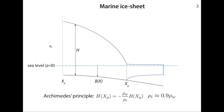This cartoon shows the vertical cross section of a marine ice sheet. It sits on a bed denoted by B, which is below sea level, and its horizontal extent is limited by the location when ice goes afloat. Ice has to go afloat because the density of ice is less than the density of water. The location where it goes afloat is called the grounding line, and it is determined by the flotation condition — the thickness at the grounding line is proportional to the bed elevation and to the ratio of the two densities.